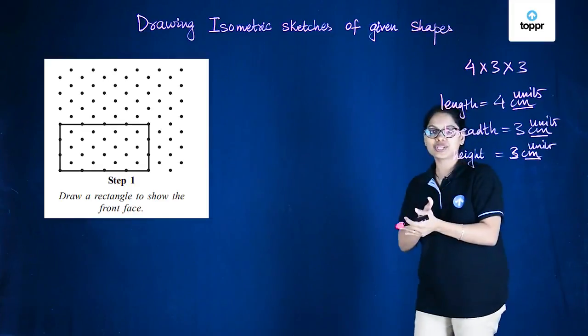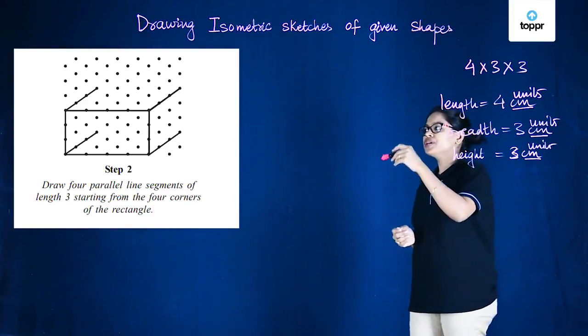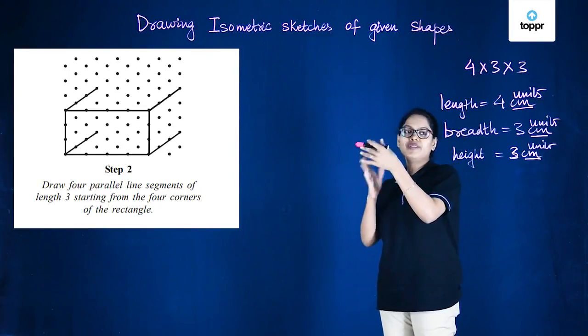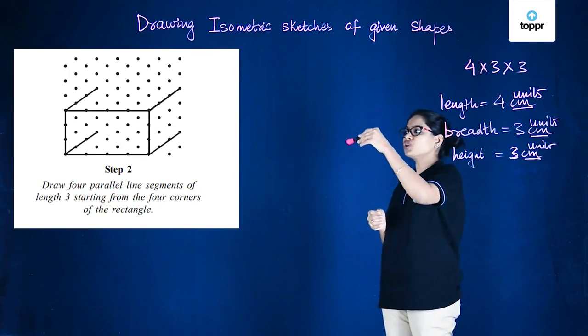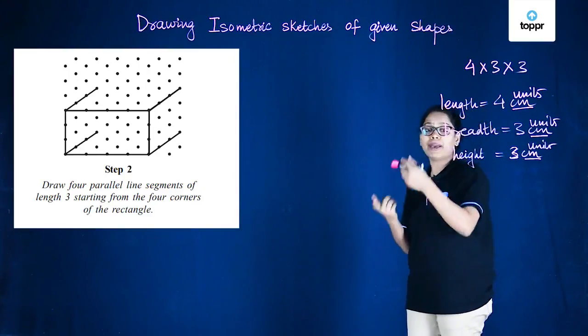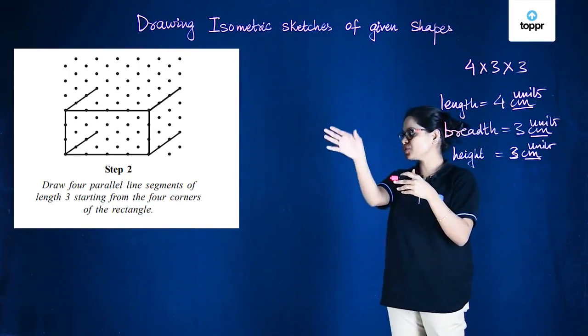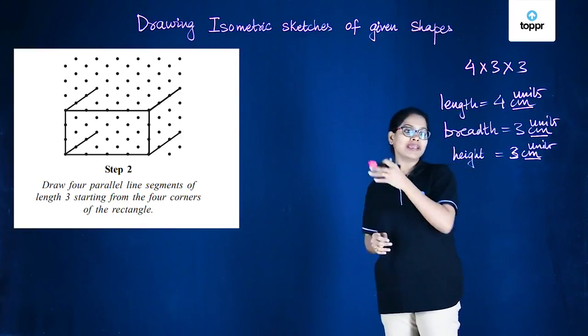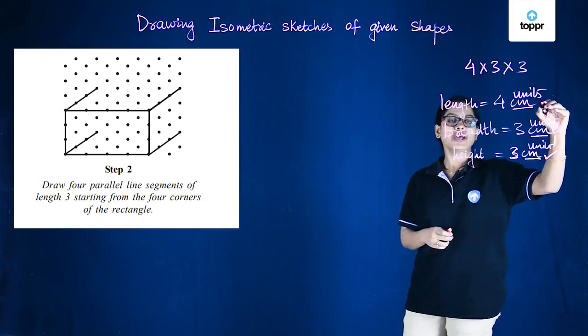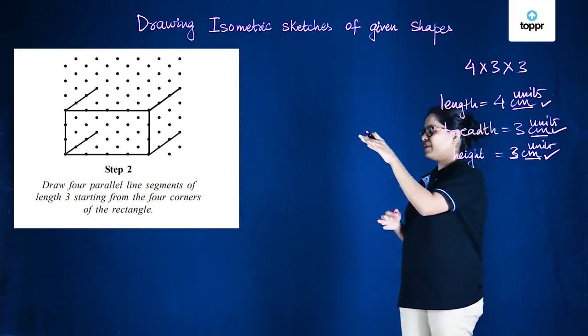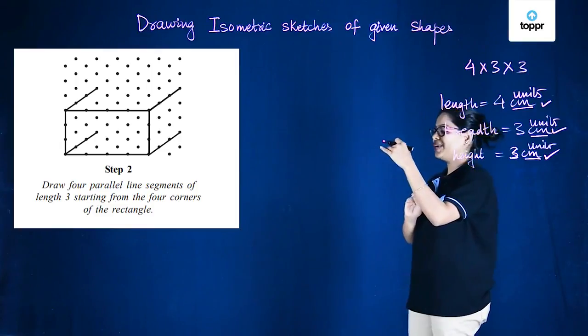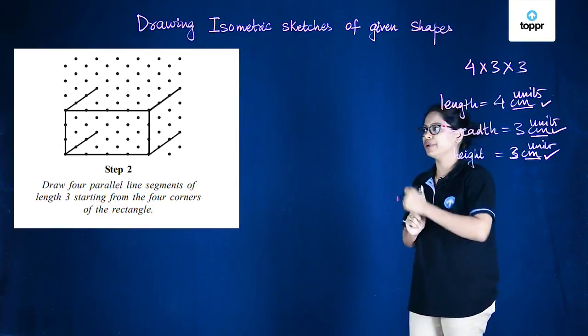Now in the next step, we are going to construct four parallel lines from each of the corners of the rectangle. From each corner of the rectangle when we extend parallel lines, making sure that these parallel lines have length 3 units because that is the dimension. So what we are doing here is we are maintaining the length as 3 units because that will be the breadth of the cuboid.